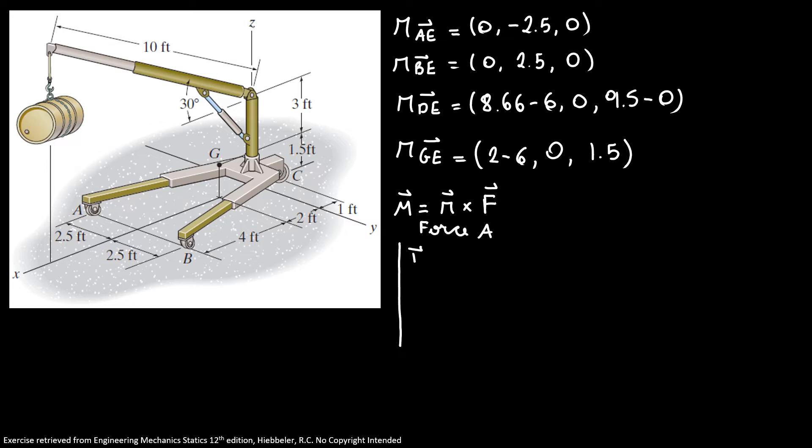For force A, we have i, j, and k, and we have 0, -2.5 and 0, and we have 0, and our normal A. So, I'm going to solve this matrix.